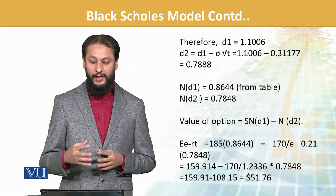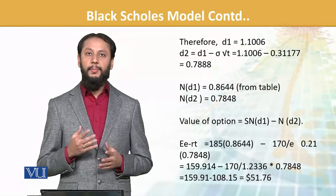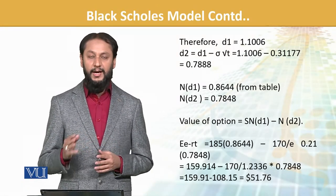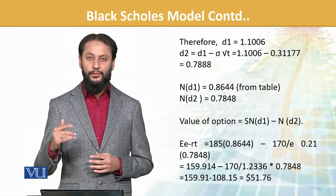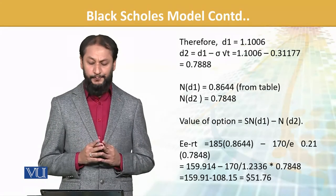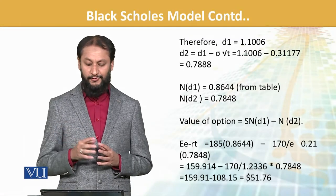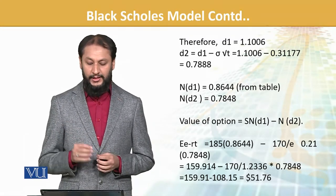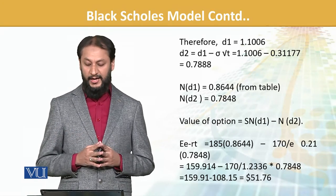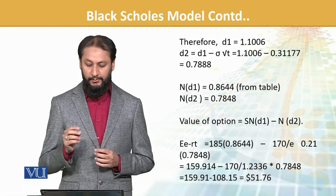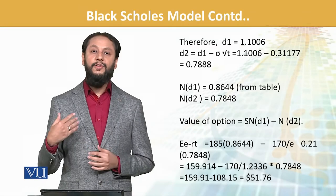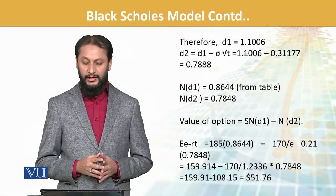Then d1 is this. The formula for d2 is d1 minus standard deviation times the square root of t. We get the value for d2. Plugging that in the formula, value of option is S×N(d1) minus N(d2)×E×e^(-rt). With the values we placed in, the option value is 51.